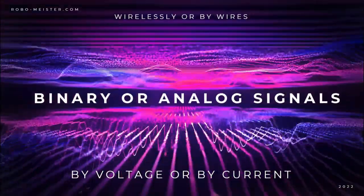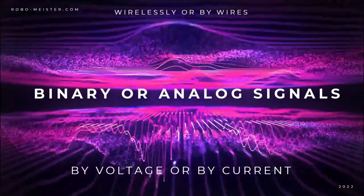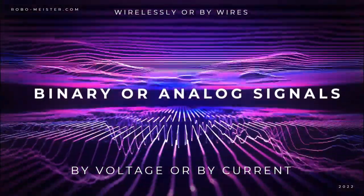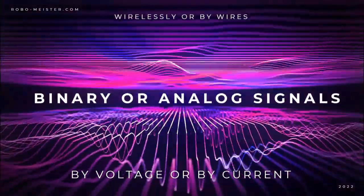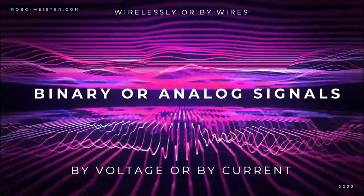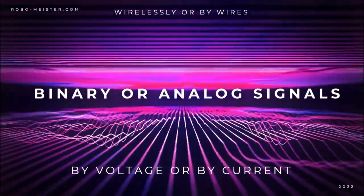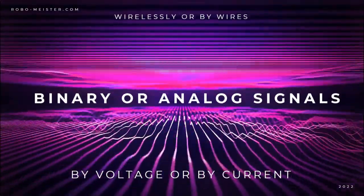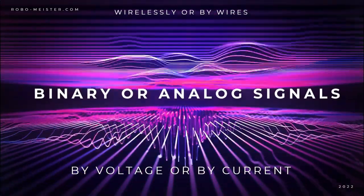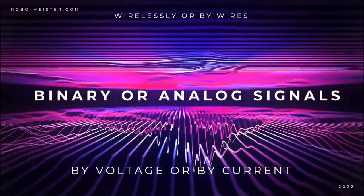At various stages, transducers are needed to adjust signals to the following elements. An actuator often requires a signal amplifier and an inverter. The subject of communication is a complex topic, and a separate video is needed to cover the most important issues in more detail.